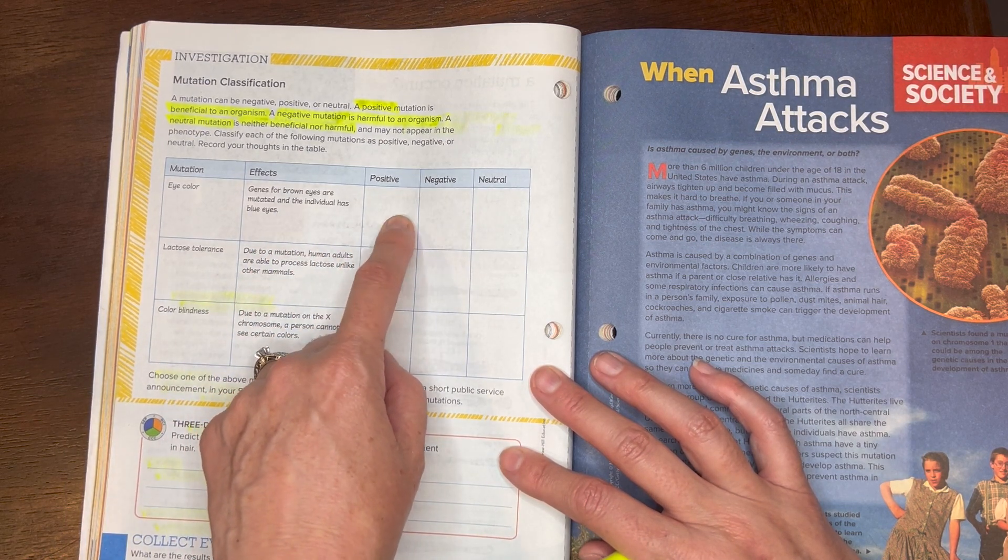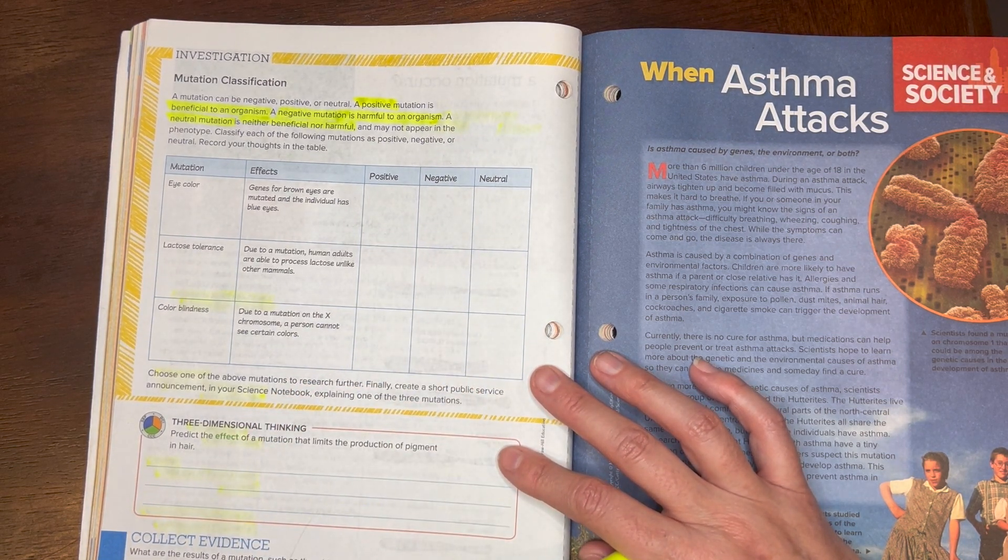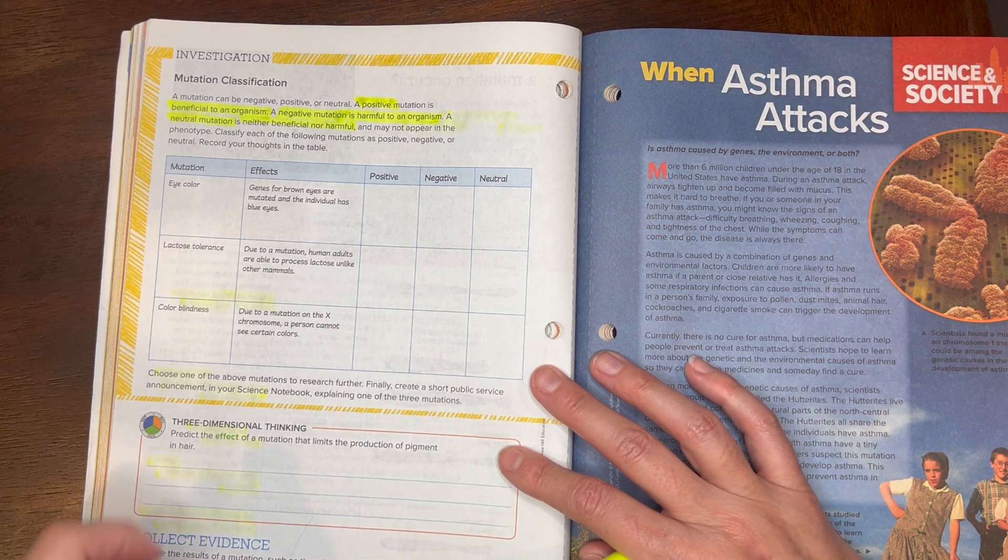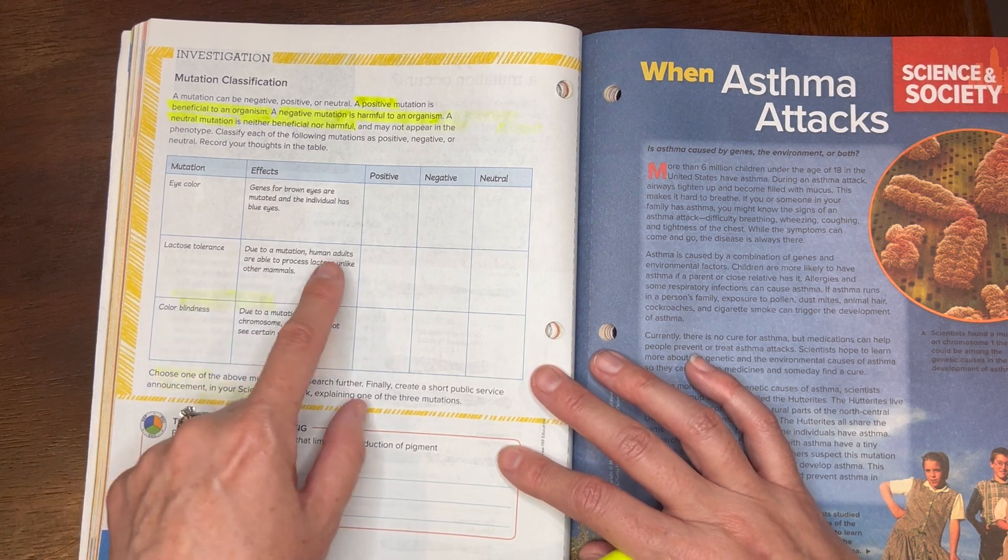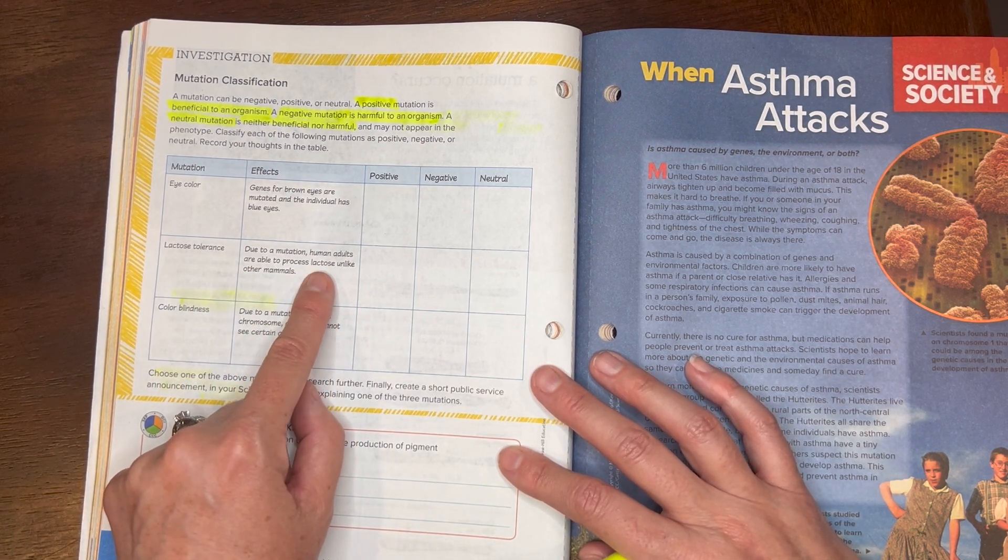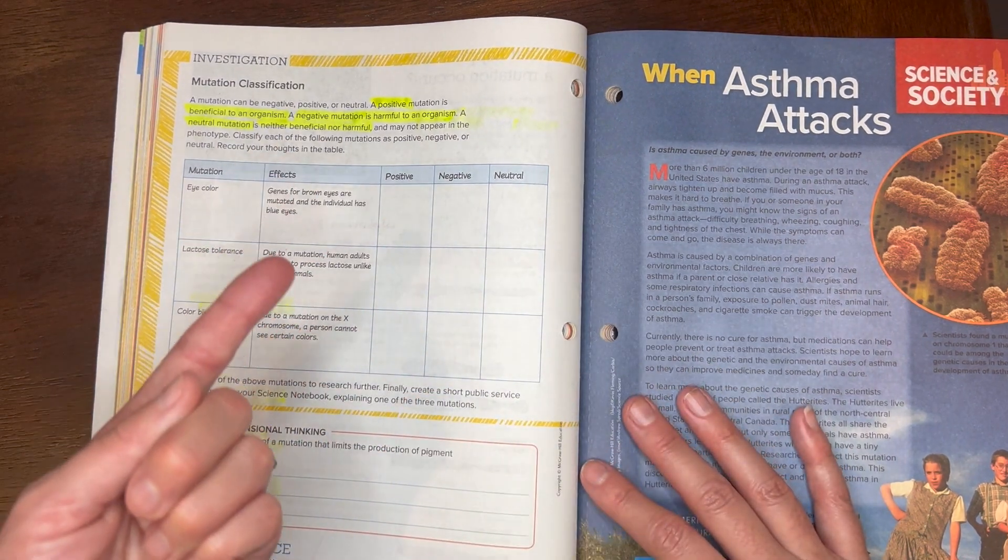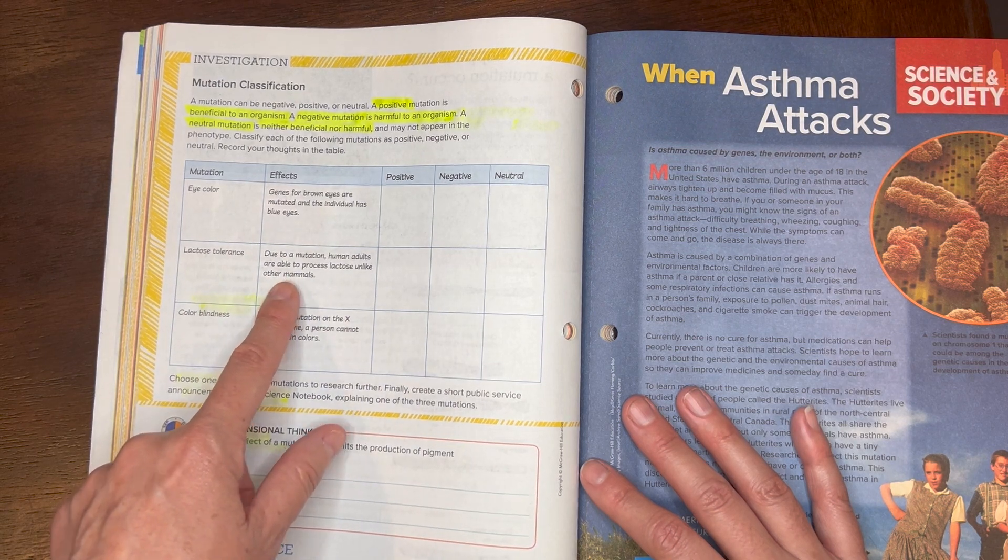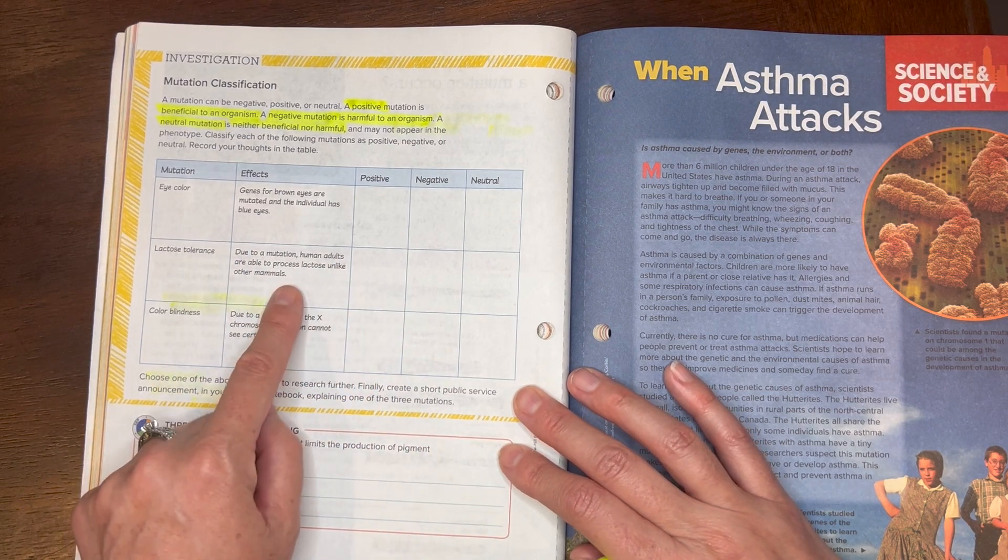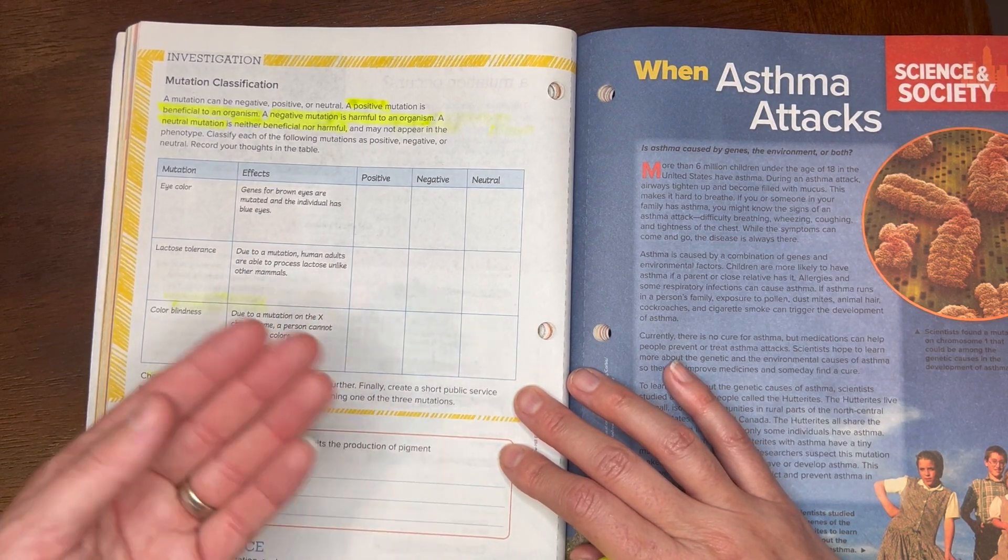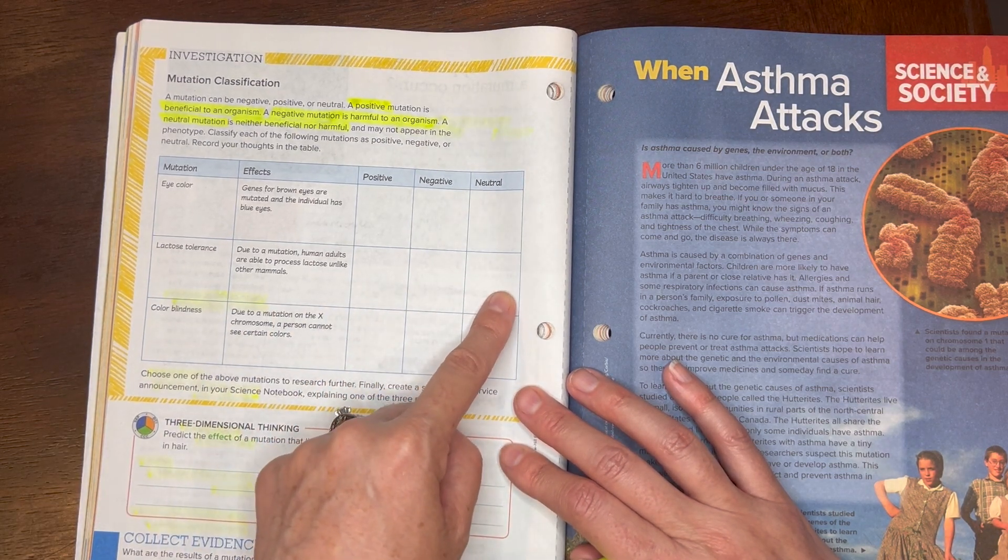The next one, lactose tolerance, not intolerance, tolerance—meaning humans are able to process lactose. Unlike other mammals, humans are the only ones who actually drink milk from another animal. All other mammals drink milk from their own parent and that's it. So the fact that humans can drink milk from other animals such as cows, sheep, goats, is that a positive, a negative, or it doesn't really matter?